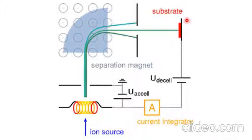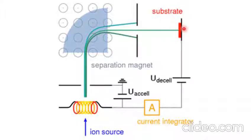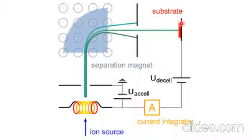The dose basically represents the amount of ions implanted onto the surface of the substrate with respect to time. Please note that the current supplied by these implanted ions onto the surface of the substrate is in the range of a few microamperes. This means that ion implantation is only a surface modification technique, and it can basically change the physical and chemical properties of the material at the surface.